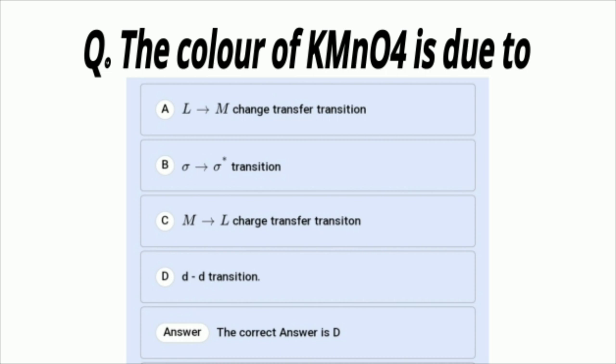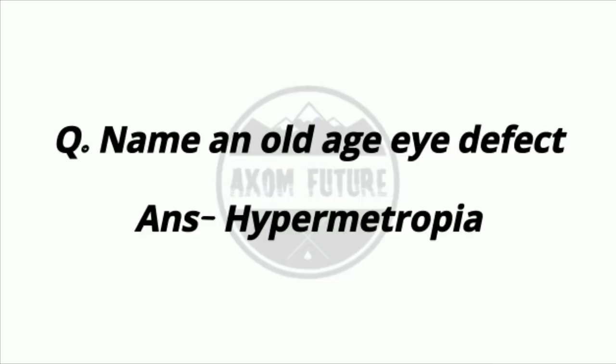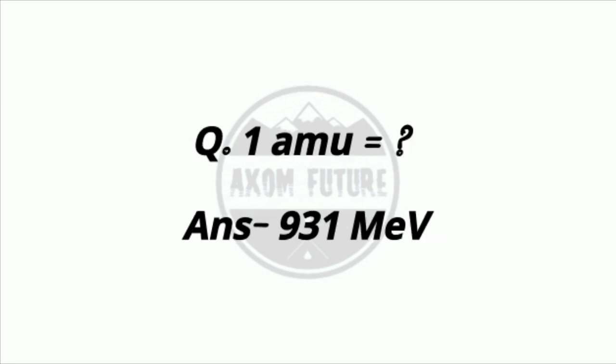Question 3: The color of KMnO4 is due to its transition metal character. Question 4: One AMU is equal to 1.931 MeV. Also covered: hypermetropia.